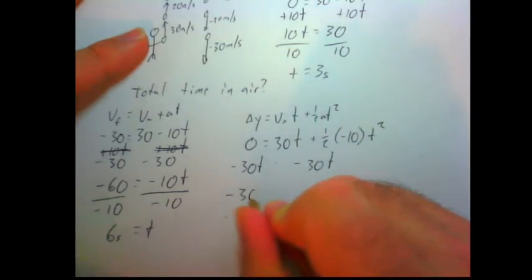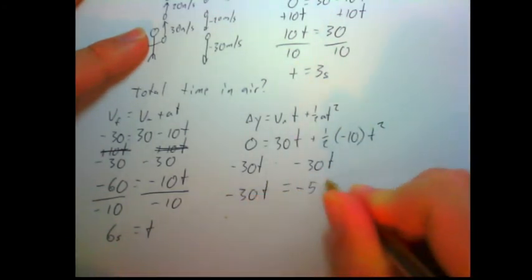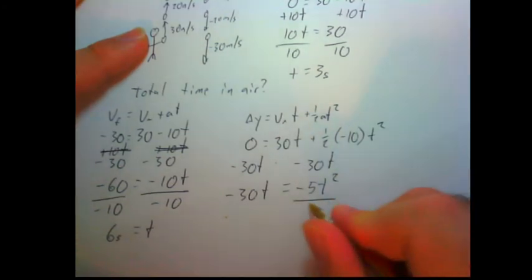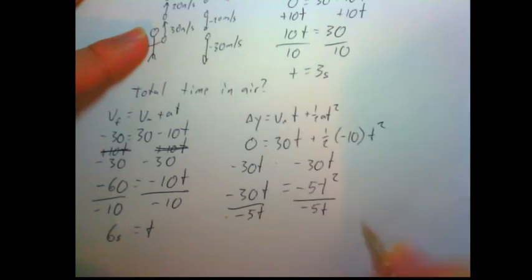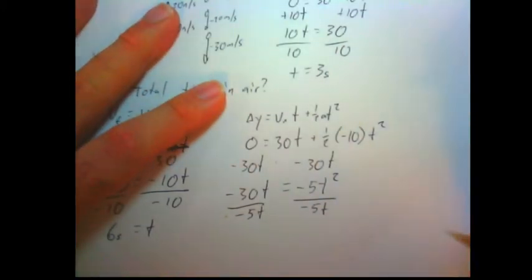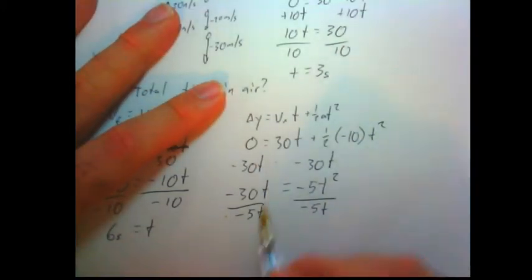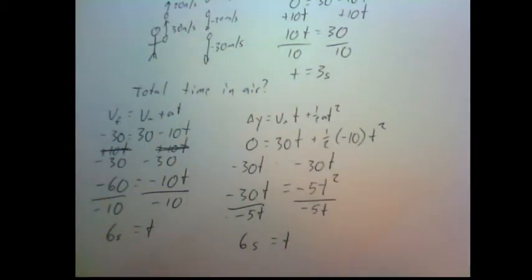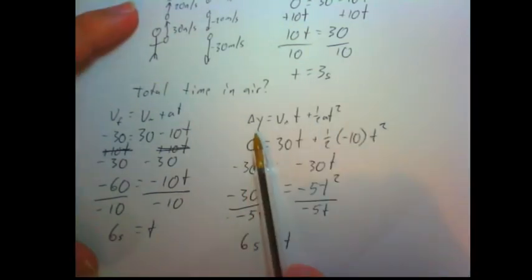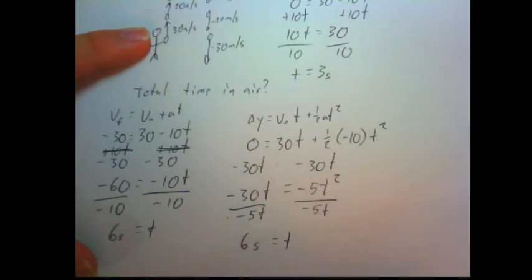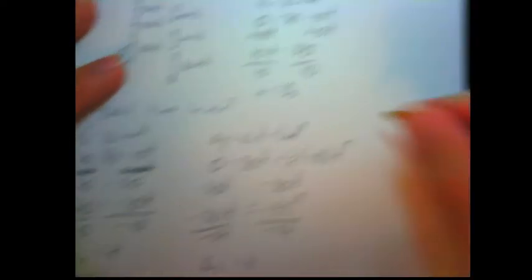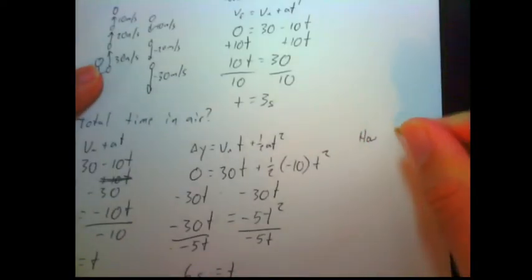Negative 30t equals negative 5t squared. Let's divide both sides by negative 5t. Don't tell your math teacher that I'm doing this without doing squares. So this would be six seconds equals t. Same answer. Notice this all came from understanding that the ball ended up at the same height from which it started.